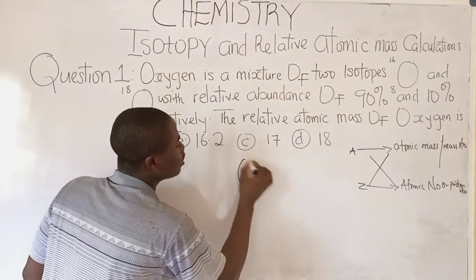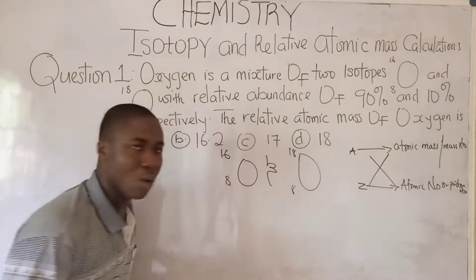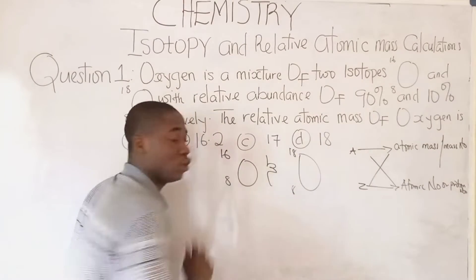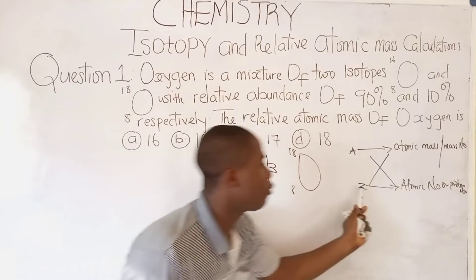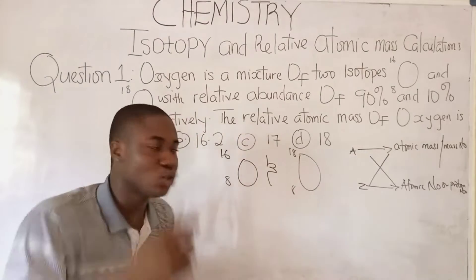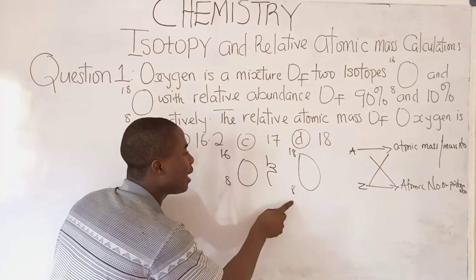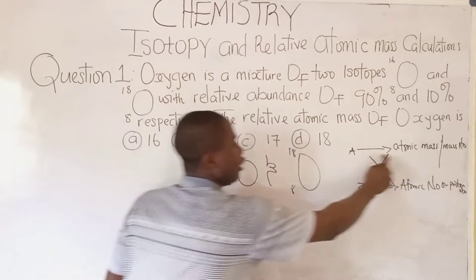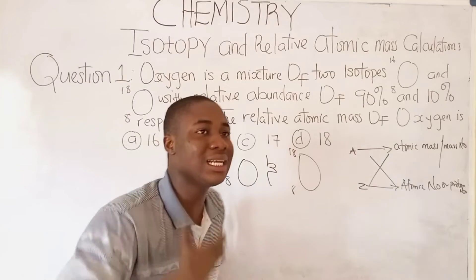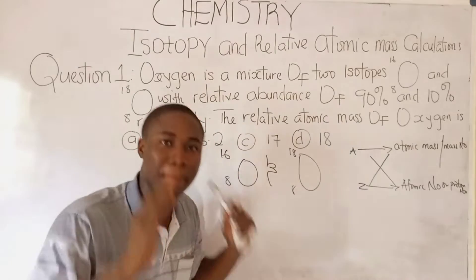Let me bring it down. Here is oxygen-16 with atomic number 8, and here is oxygen-18 with atomic number 8. So isotopy is a phenomenon whereby atoms in their atomic state of the same element — oxygen — have the same atomic number. The atomic number is located at the bottom and it is 8. You can see that for isotopy, they have the same atomic number but different mass number, which is A, the mass number or atomic mass.